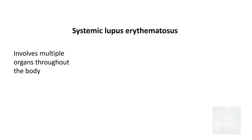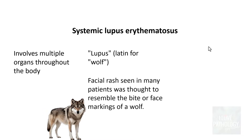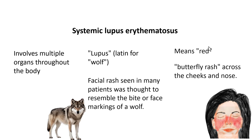The name systemic lupus erythematosus: 'systemic' because it involves multiple organs throughout the body. 'Lupus' is a Latin word meaning wolf — it was called lupus because the facial rash was thought to resemble the bite of a wolf or the face markings of wolves. 'Erythematosus' means red, referring to the classical butterfly-shaped reddish rash across the cheeks and nose.